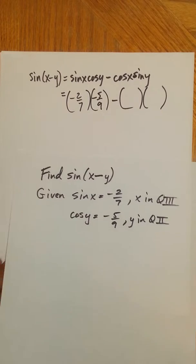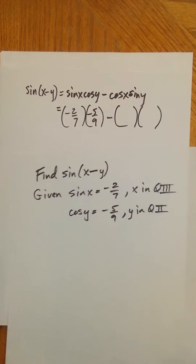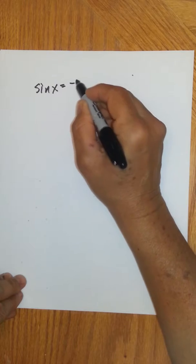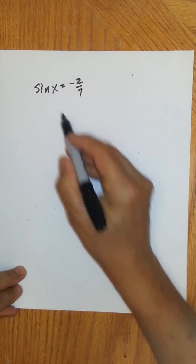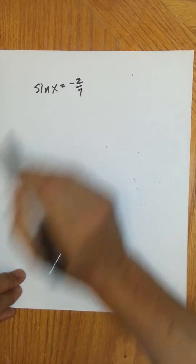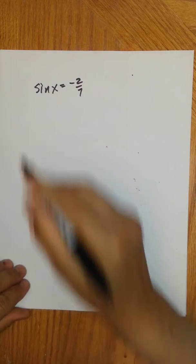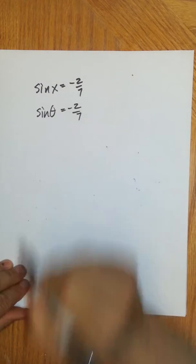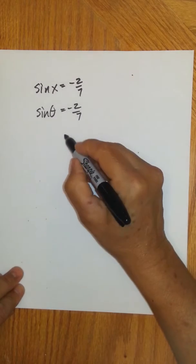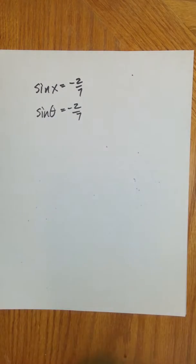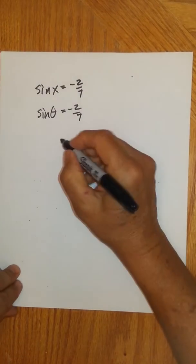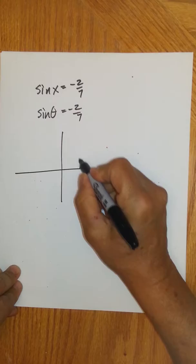Now, when they write sine of x equals negative two-sevenths, x here is just an angle. The input to any trig function is an angle. I could think of it as sine of theta equals negative two-sevenths. In that sense, I have an angle, and we're told that angle is in quadrant three.